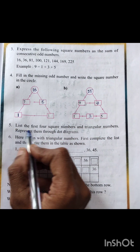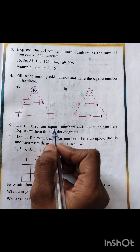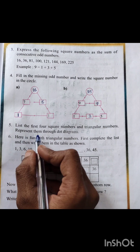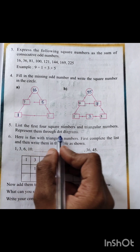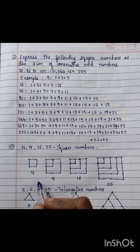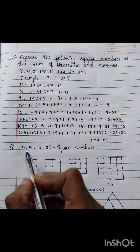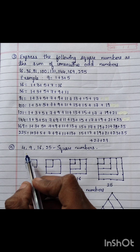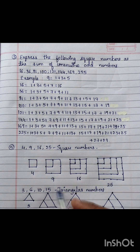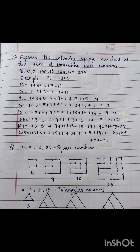Problem five: list the first four square numbers and triangular numbers and represent them through dot diagrams. I have listed the first four square numbers and first four triangular numbers, and the dot diagrams are also shown. This completes problem five.